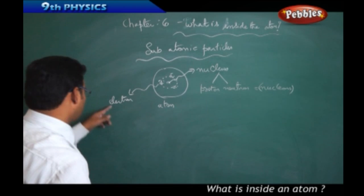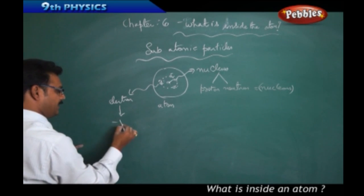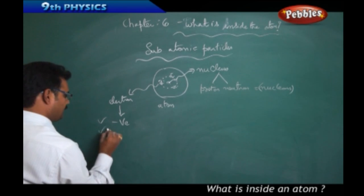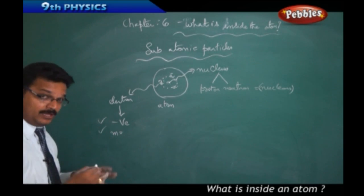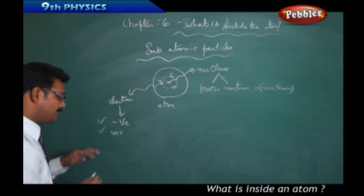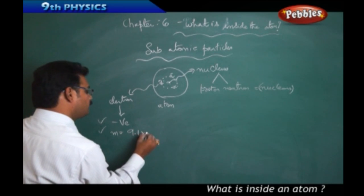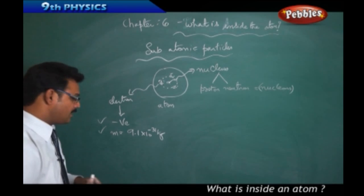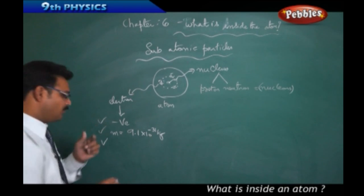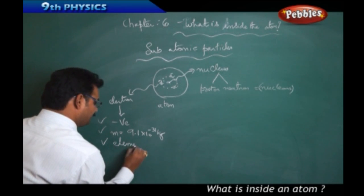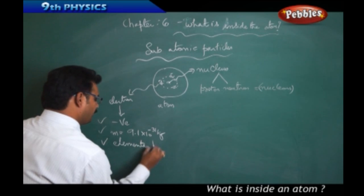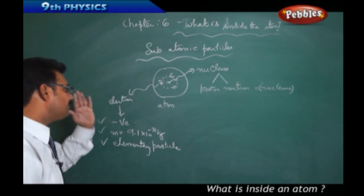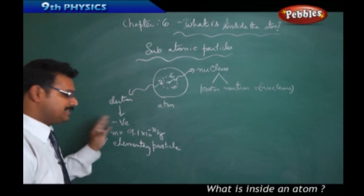Coming to the electron: the electron carries a negative charge. Its mass is extremely small — 9.1 × 10⁻³¹ kg — the least mass in the universe. That is why the electron is called an elementary particle, meaning you cannot divide the electron further.